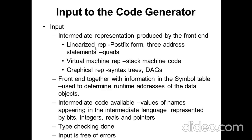One is linearized representation, meaning it is represented in the form of postfix. Three-address statements are also represented as quadruples. Next is virtual machine representation, which deals with stack machine code and the topics of stack allocation and static allocation. Third is graphical representation, given by syntax trees or DAGs. The symbol table is connected with all the phases of the compiler.